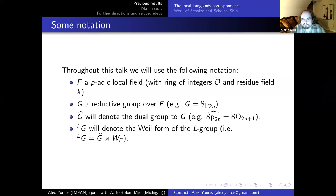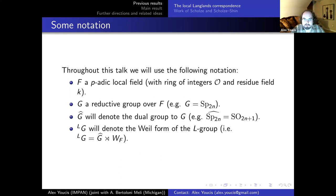I'm going to use the following notation throughout the entire talk. F will always be a p-adic local field. I'm going to use O to denote the ring of integers and k the residue field. G will always be a reductive group over F. For basically everything I'll say, I'm going to assume it's quasi-split, mostly out of convenience rather than necessity. G-hat will denote the dual group and LG will denote the Weil form of the L-group, so G-hat semi-direct product W_F.